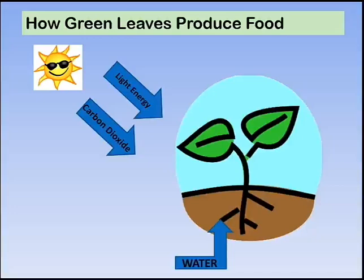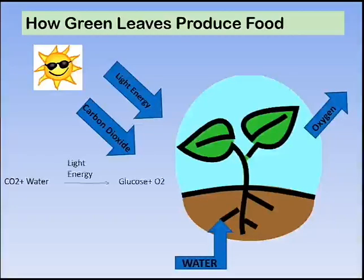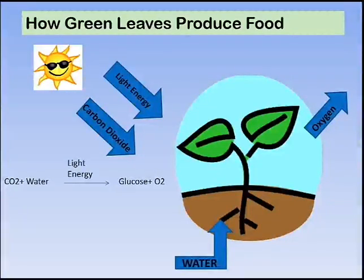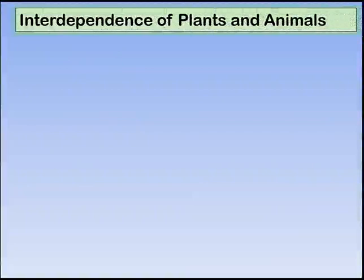Carbon dioxide enters through the stomata. Water is absorbed through the roots and carried through the stem to the rest of the plant. Water, carbon dioxide, and sunlight combine in the leaf to produce glucose and oxygen. Oxygen and water vapor exit the leaf through stomata. Water loss from leaves is called transpiration.